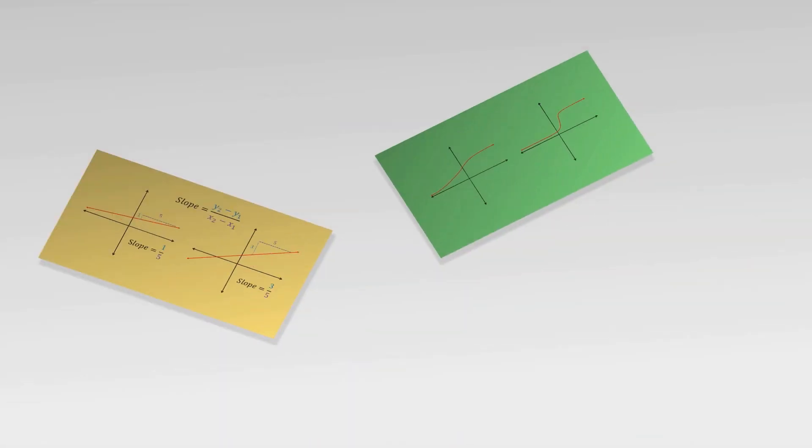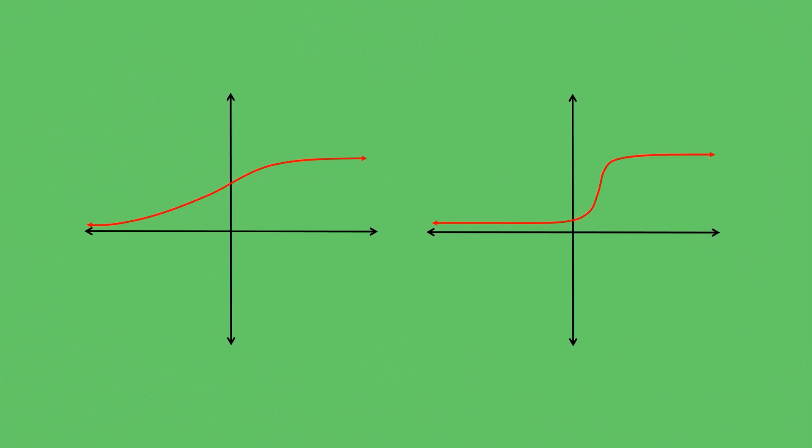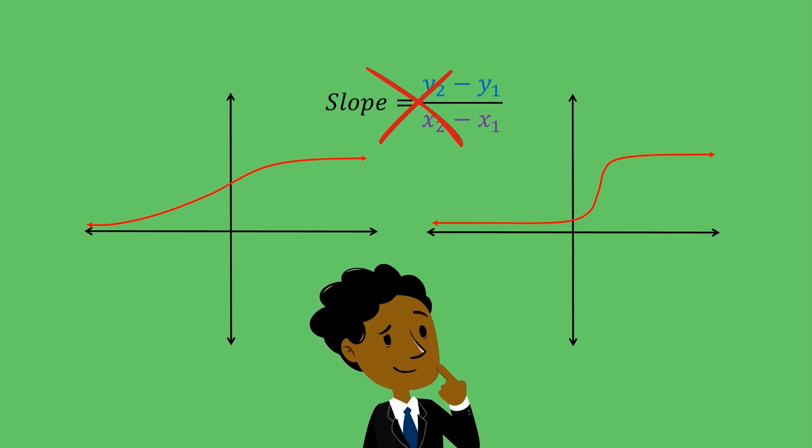Now back to our functions. These functions are definitely not lines. So unfortunately we can't use the idea of slope to describe how they are changing. Or can we?